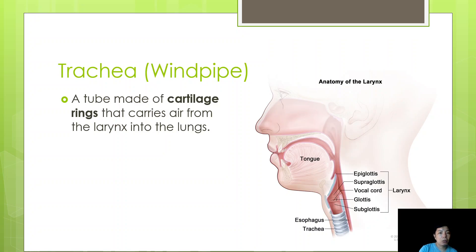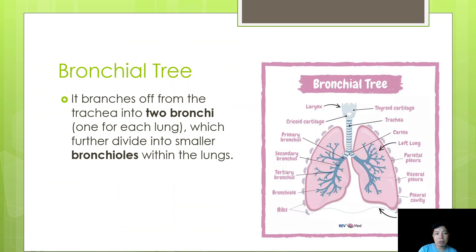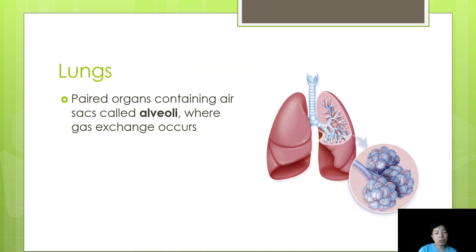Now we move to the lower respiratory tract — the bronchial tree. The bronchial tree branches off from the trachea into two bronchi, one for each lung, which further divide into smaller bronchioles within the lungs. The branching begins at the lower part of the trachea, dividing into the left bronchus going to the left lung and the right bronchus going to the right lung.